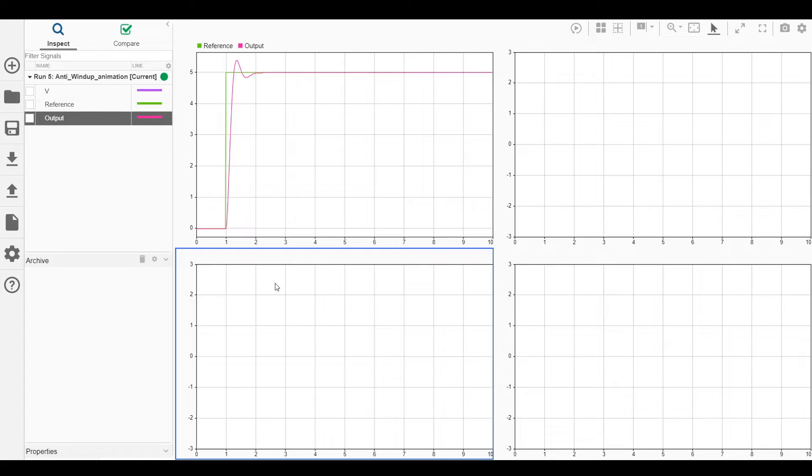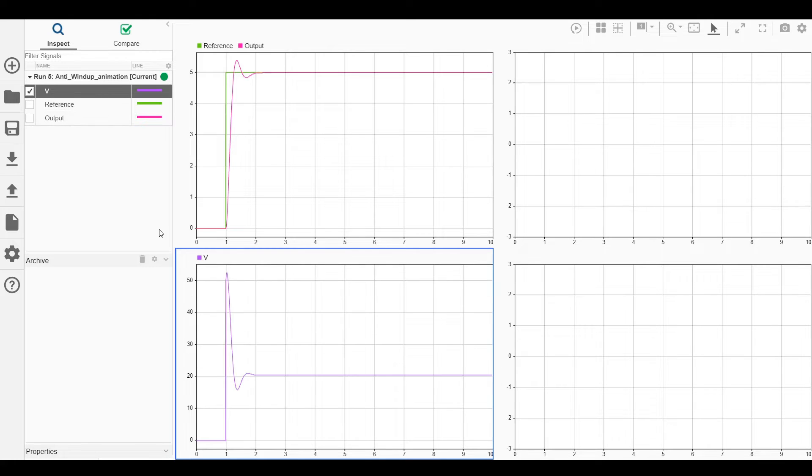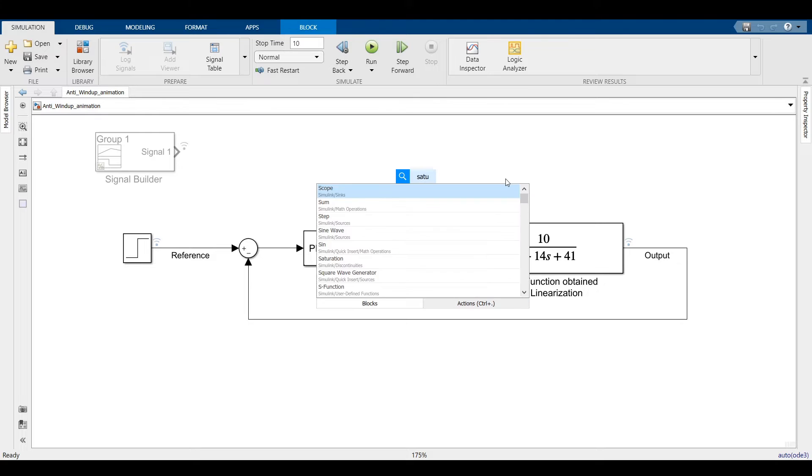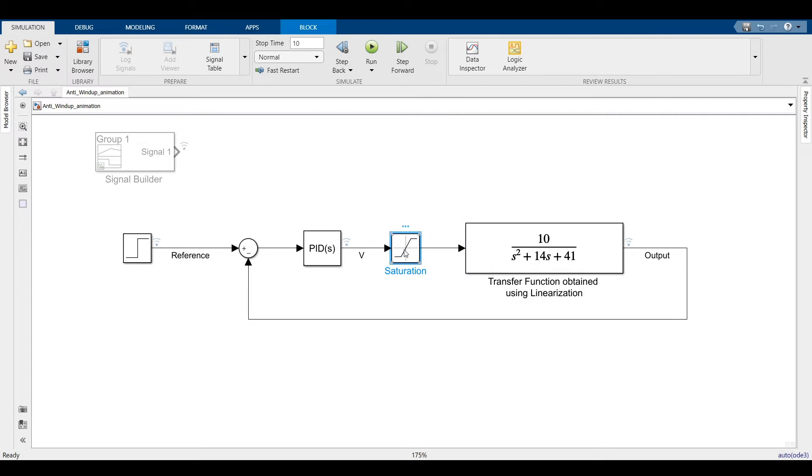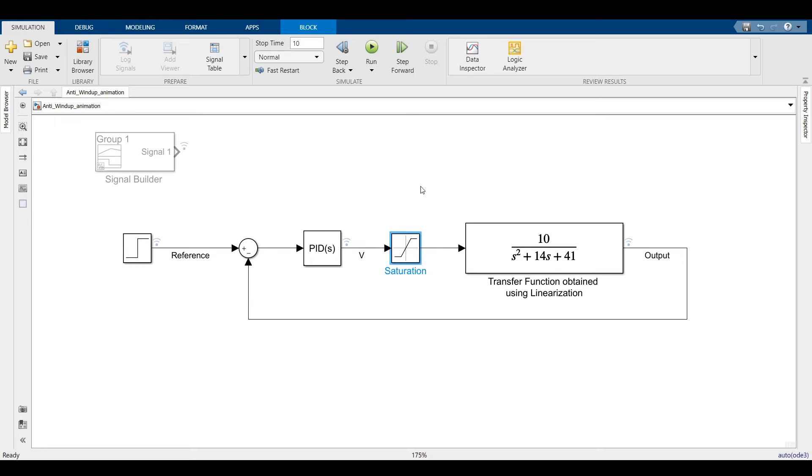We have a nice fast response with reasonable overshoot. But there is a problem here. Let us take the actuator input which is the voltage input in this case. It goes more than 50V. But we know that it is not possible to give 50V to the motor. So I will add a saturation block which will limit the voltage to 24V no matter what the commanded input voltage is.